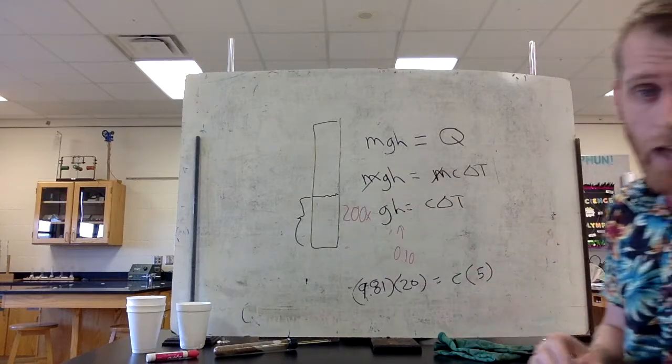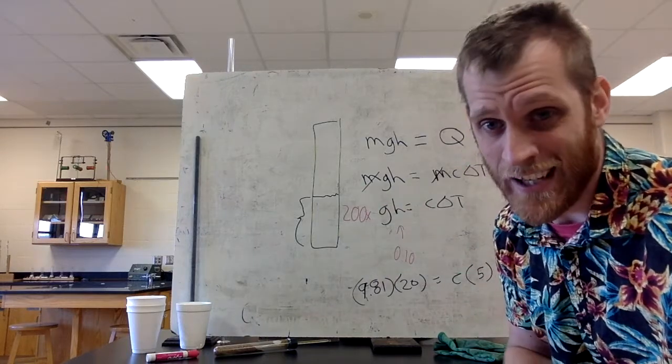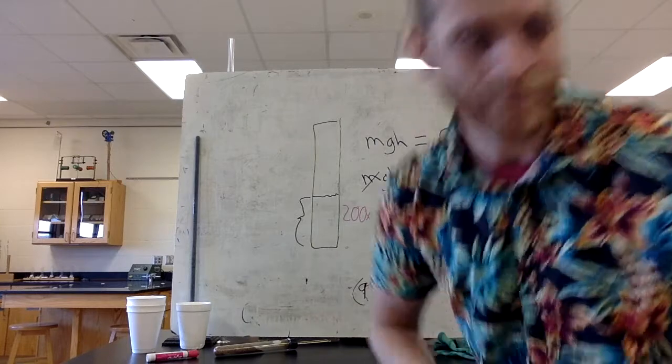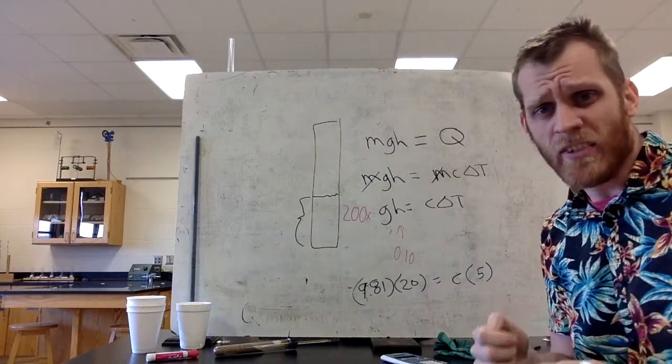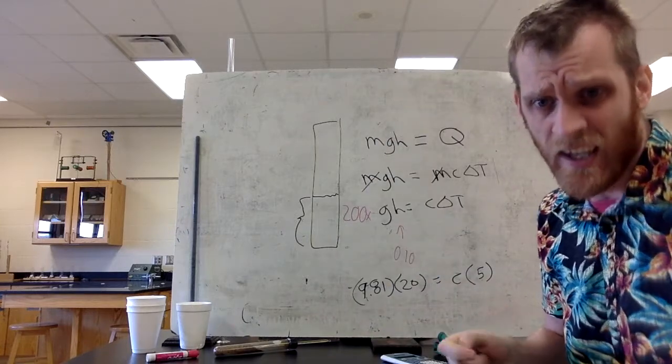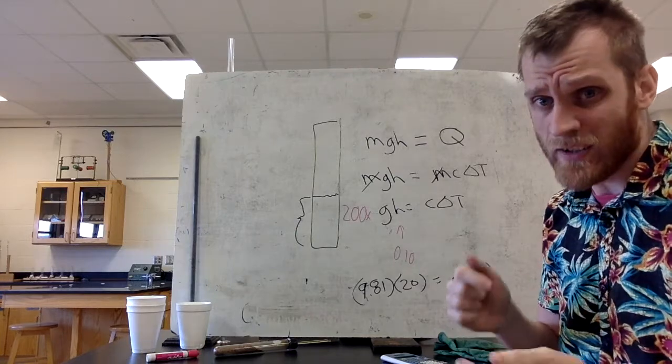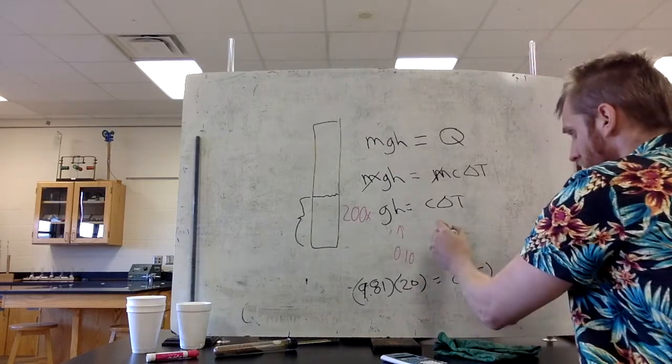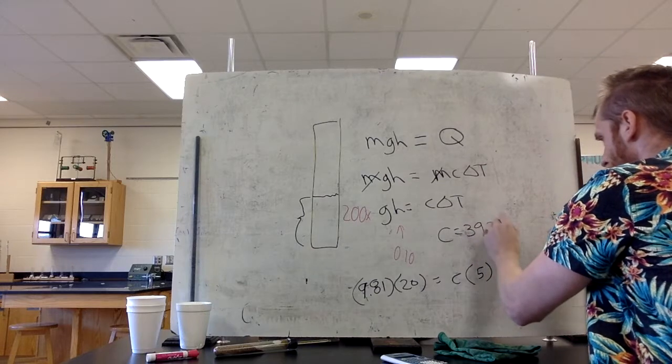All right, very good. So now we can find the specific heat capacity of sand. Just rearrange that for c. So I get a value for specific heat capacity of sand to be 39.24. So c is 39.24.